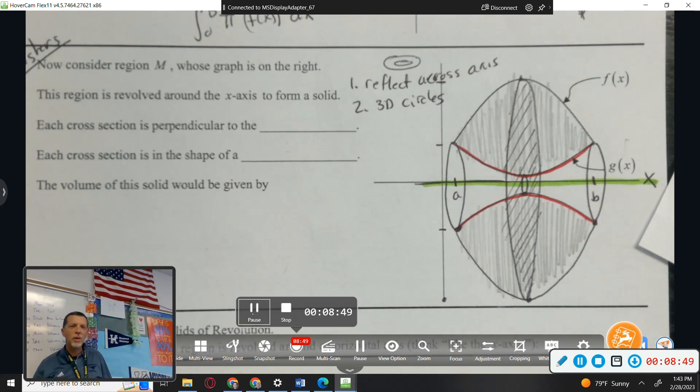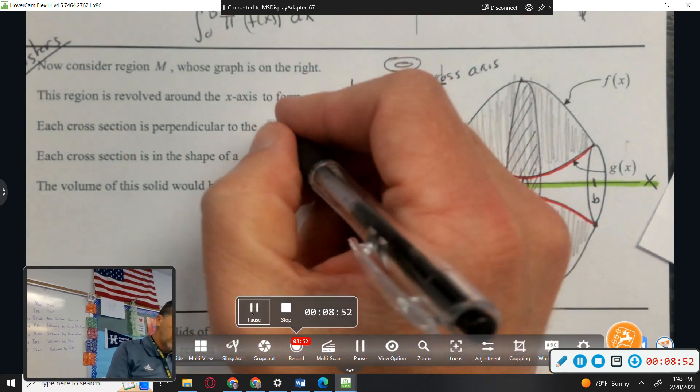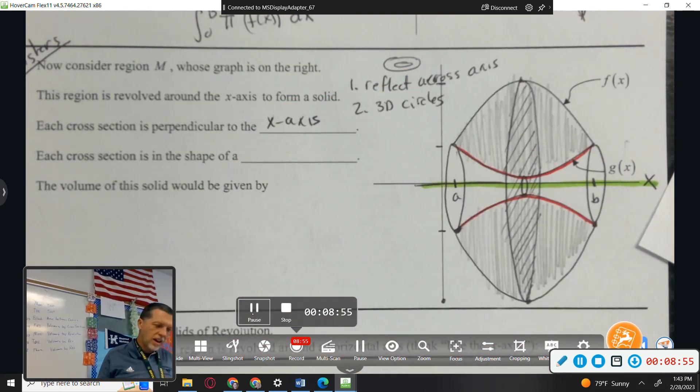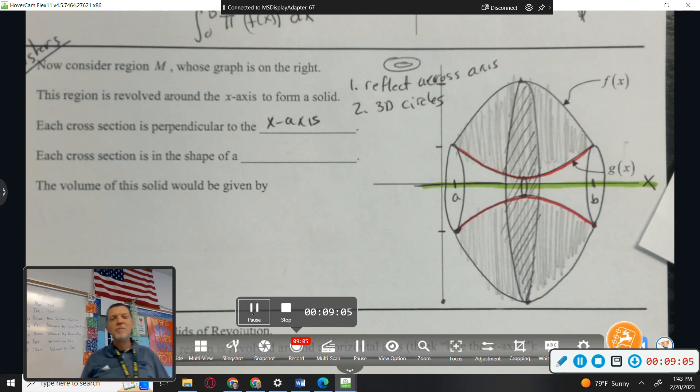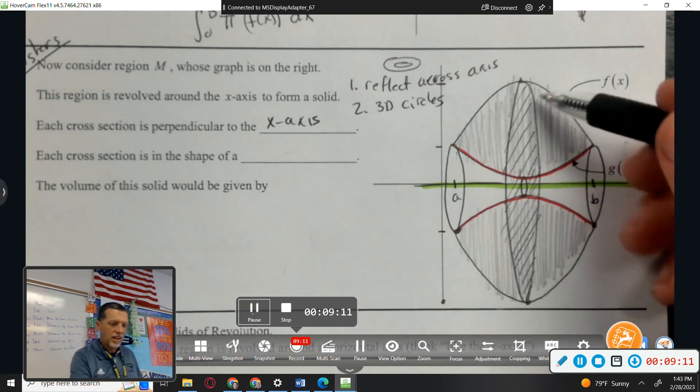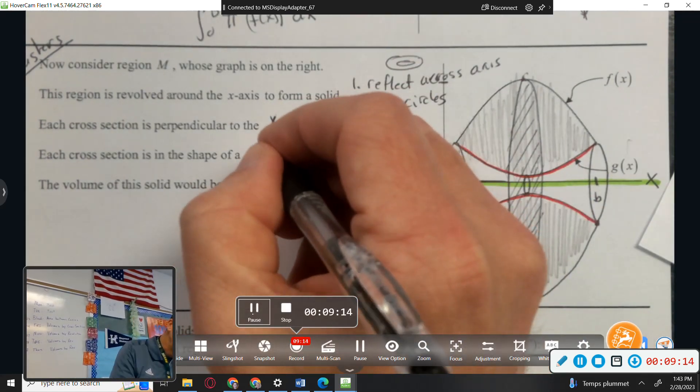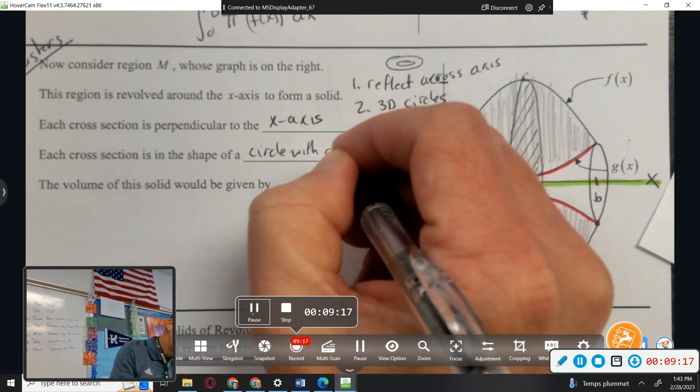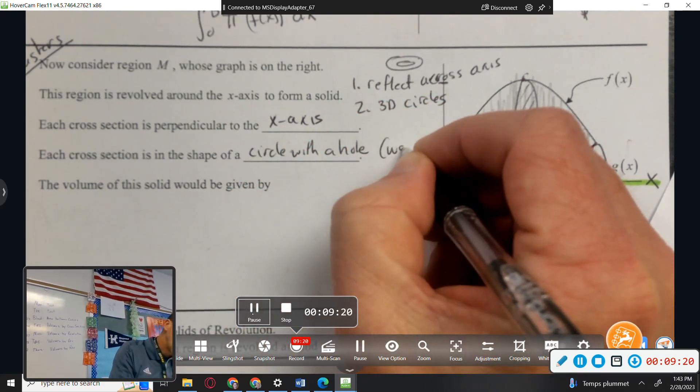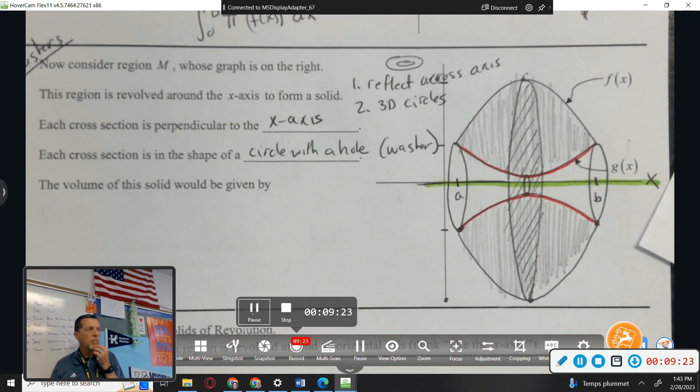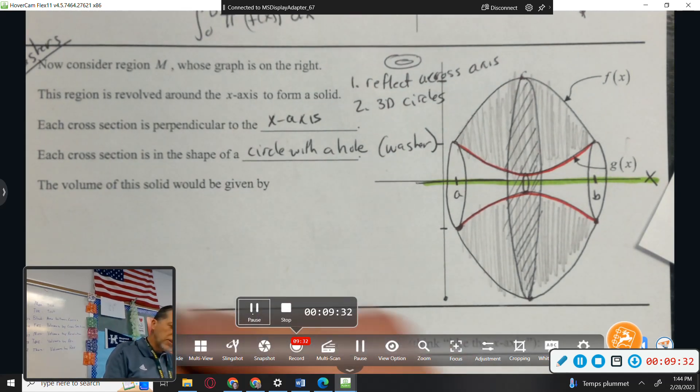Each cross section is perpendicular to the x-axis. Each cross section is in the shape of a circle. Well, I wouldn't say a circle. It is a circle, but it's a circle with a hole in it. The outside, that's a circle, but it has a hole in it. Circle with a hole or a washer.